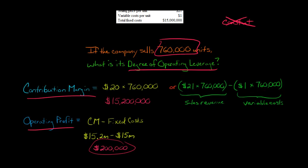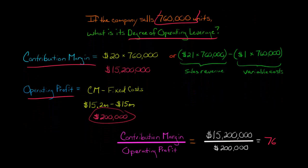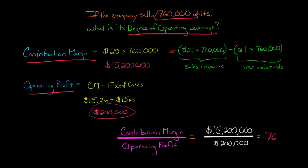Now we know both the numerator and the denominator to calculate the degree of operating leverage. Remember, it was contribution margin, which is $15.2 million. So we've got that divided by the operating profit of $200,000. That gives us 76.